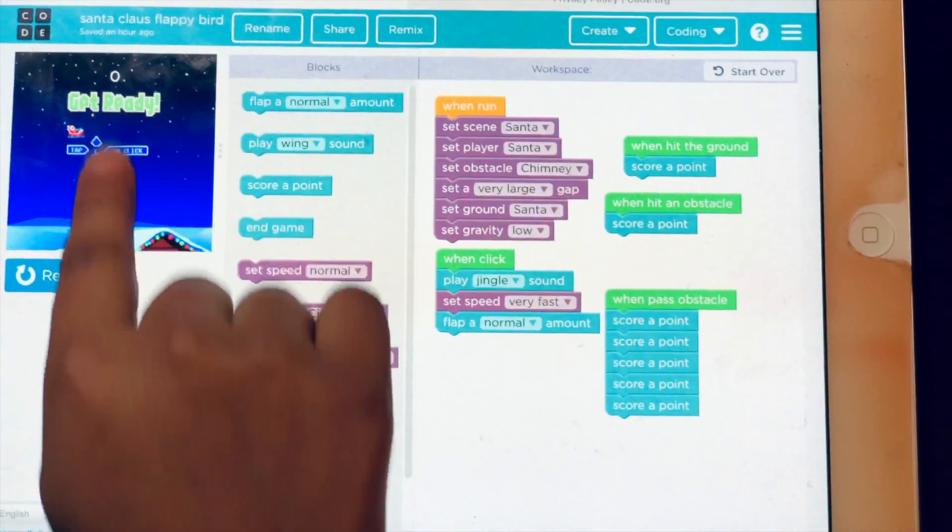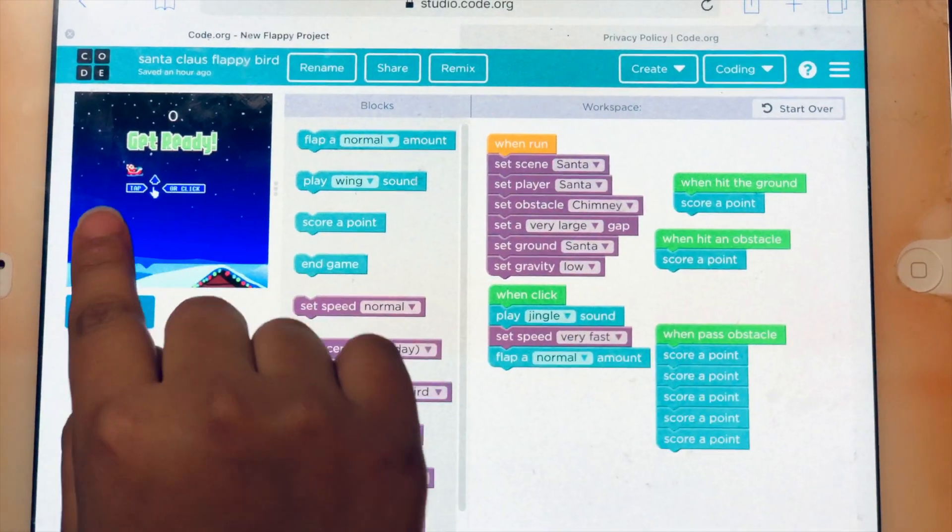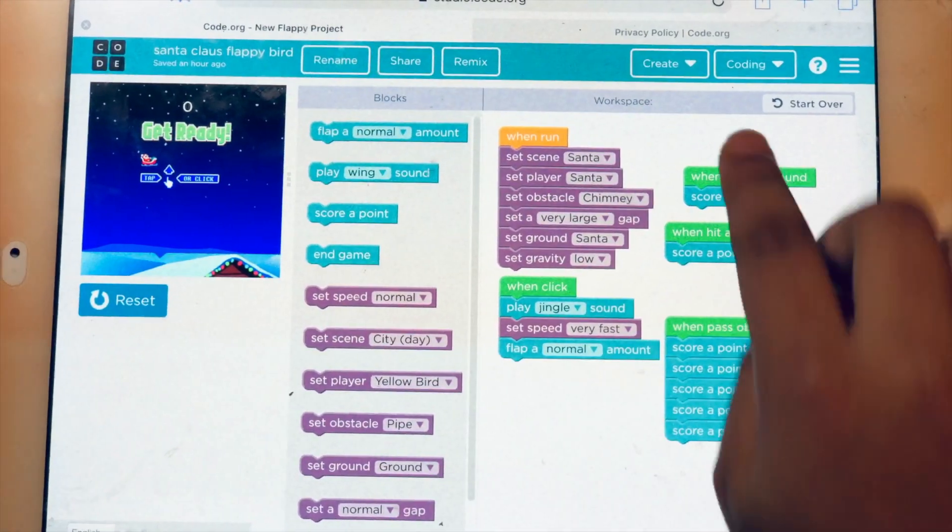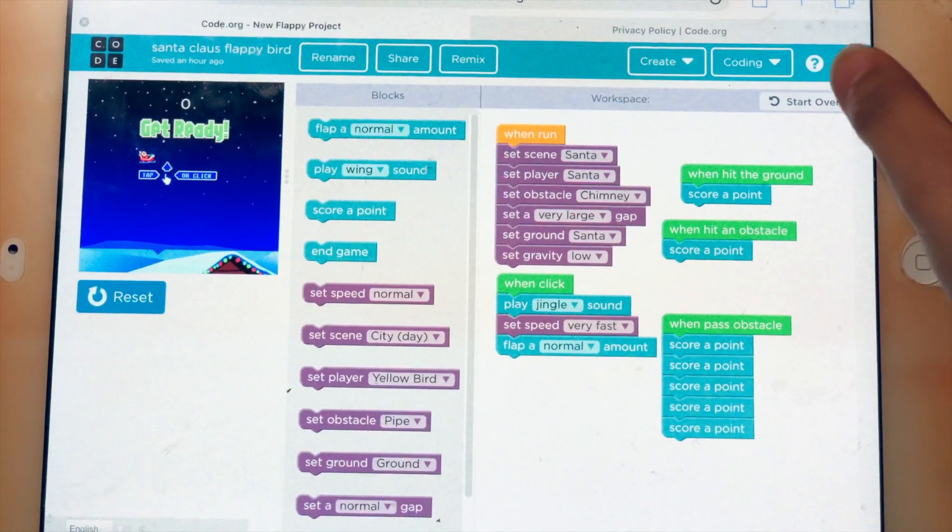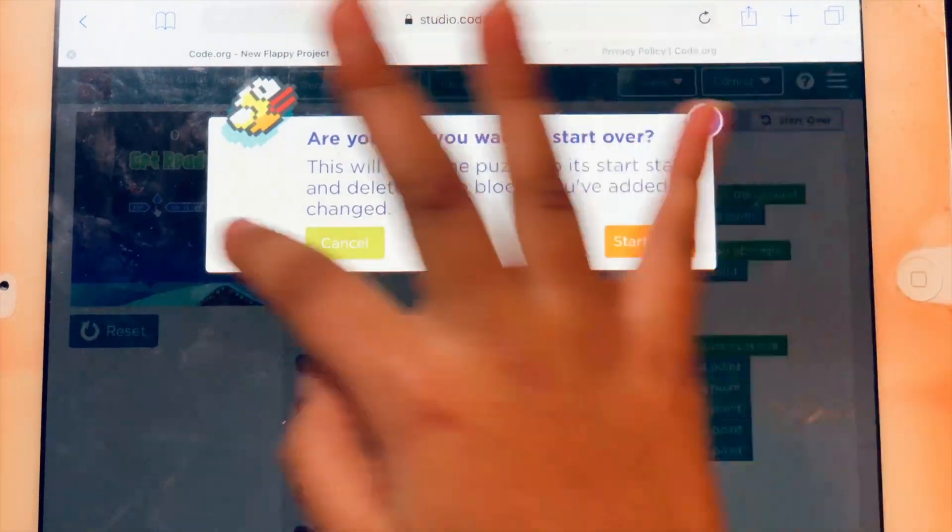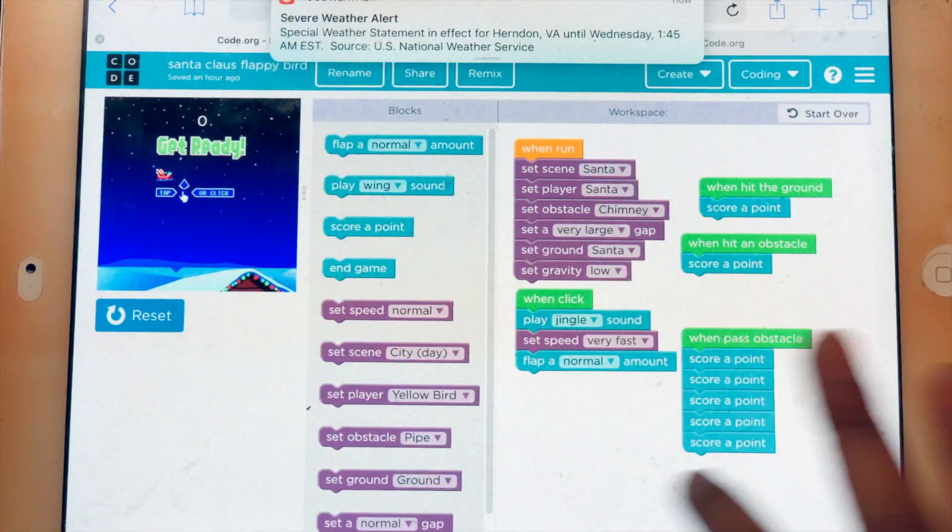This is where the activity will be shown and where what you coded will be shown. These are your blocks and this is your workspace. Next to the workspace button there's a button that says start over. You can click it to delete all you've added.